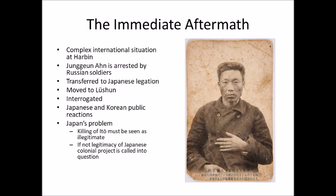Shortly after Ahn Chungun was transferred to the Japanese legation, he was moved to the prison in Lushun. Lushun, known in the West as Port Arthur, was an important place — there had been major battles there during the Sino-Japanese and later Russo-Japanese Wars. It was also the seat of the Japanese Kwantung Government General in Manchuria, the center of Japanese administration in the region. Ahn was interrogated there by the Japanese.